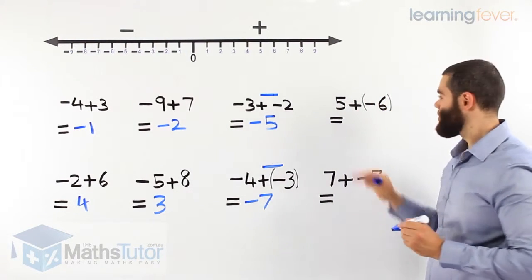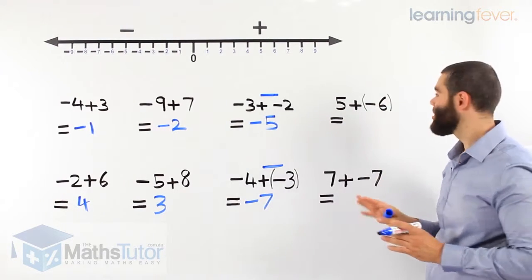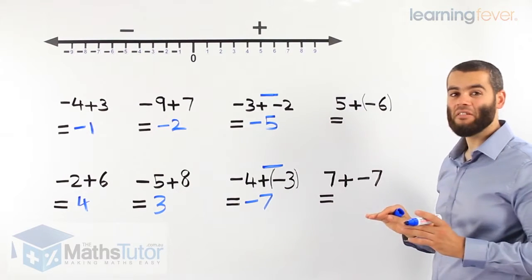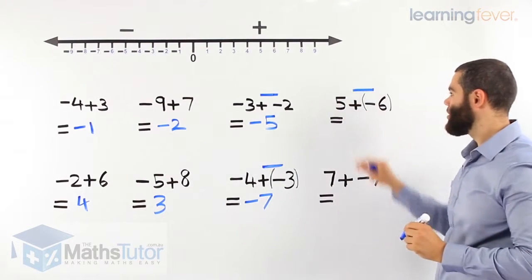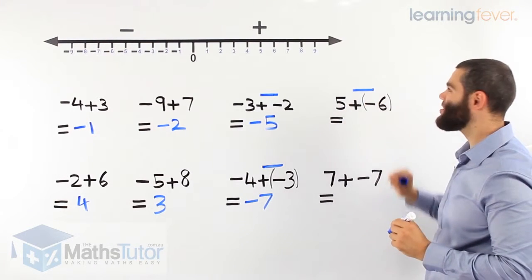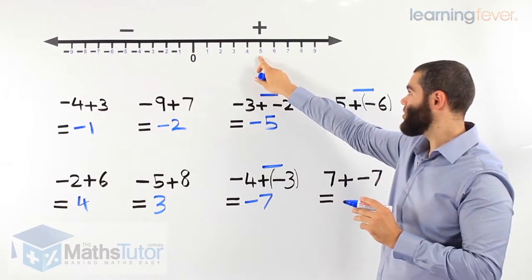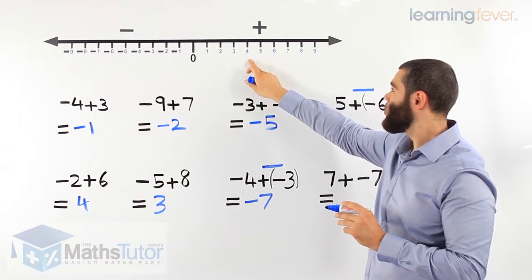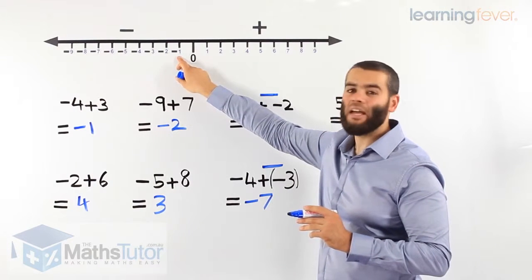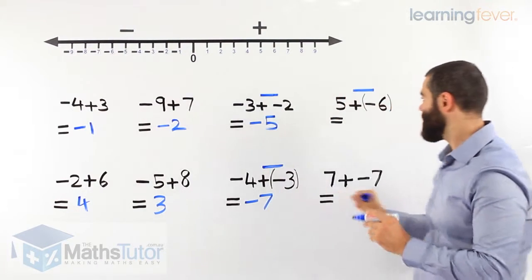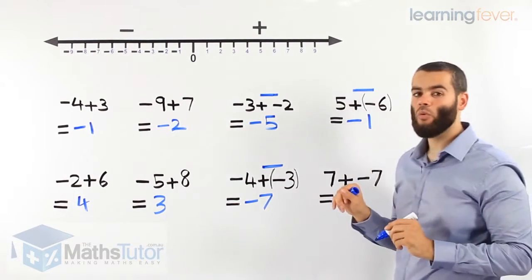5 plus negative 6 in brackets. We disregard the brackets, and we notice a plus and a minus — they have a fight and the minus wins. So it becomes 5 take away 6. We start at positive 5 and go to the left: 1, 2, 3, 4, 5, 6 — landing on negative 1. So our answer is negative 1. 5 take away 6 is negative 1.